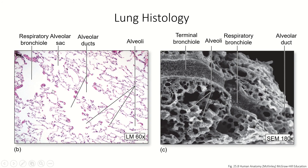Now, lung tissue is pretty identifiable. You can see individual squamous cells making little alveoli. There's an alveolus here, and here. We've got alveolar ducts making these big spaces, and respiratory bronchioles making even larger spaces. You can also see blood vessels passing through here, carrying blood into and out of these spaces.